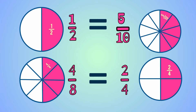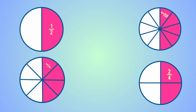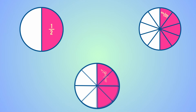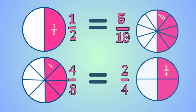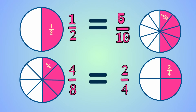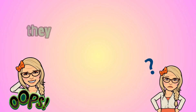Are these equivalent fractions? Do they take up the same amount? Yes! They are equivalent fractions. 1 half is equivalent to 5 tenths, 4 eighths, and also 2 fourths. All these fractions are equivalent fractions because they take up the same amount in the fraction circle.